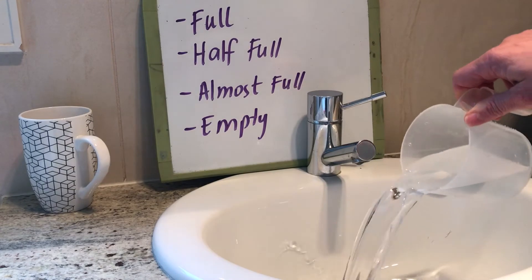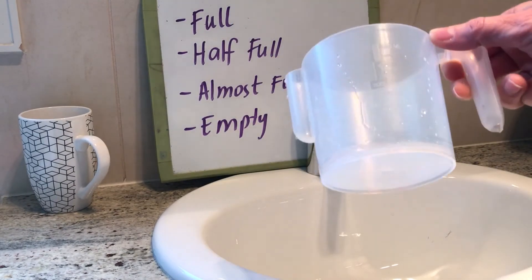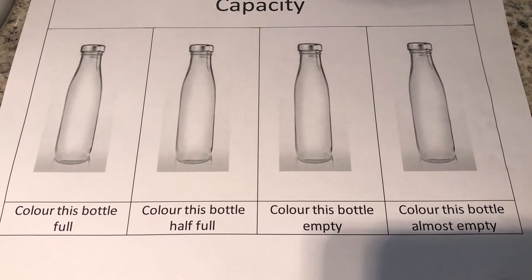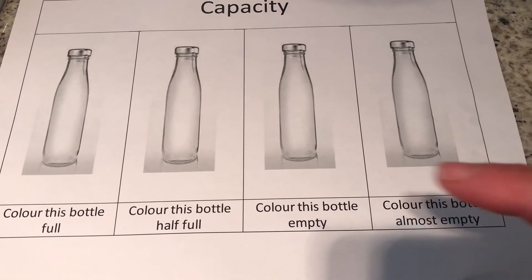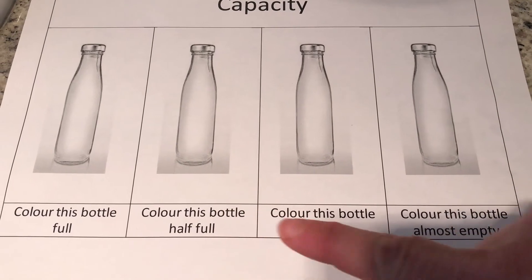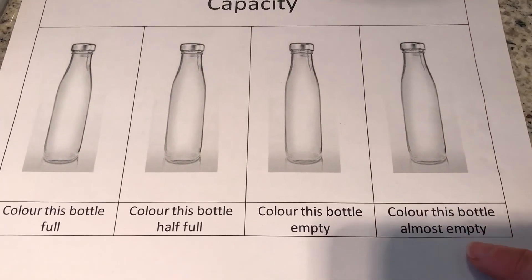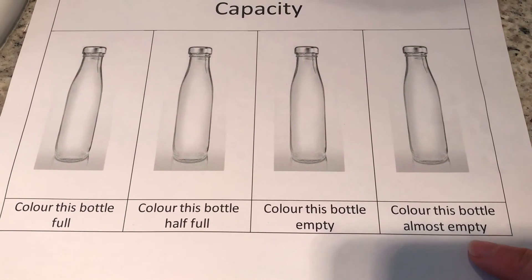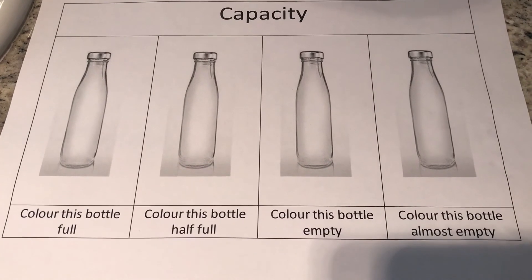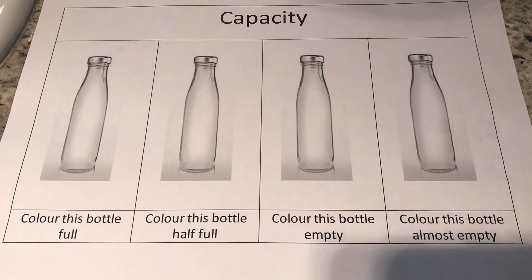And what is this? This is empty. Today your worksheet is to: color this bottle full, color this bottle half full, color this bottle empty, and color this bottle almost empty. You can use whatever colors, textures, or crayons. Finish the worksheet and upload it to Class Dojo.